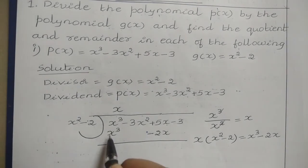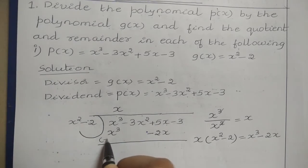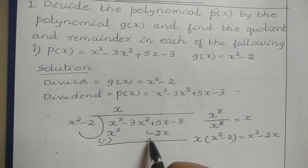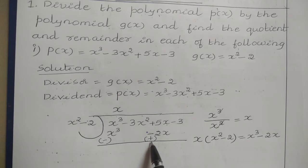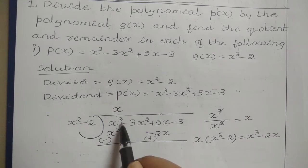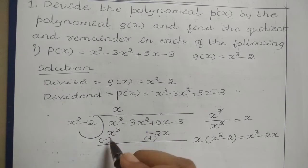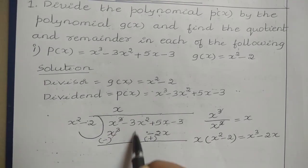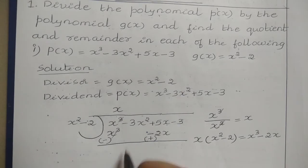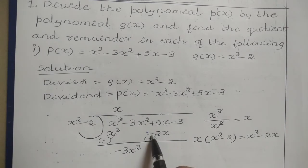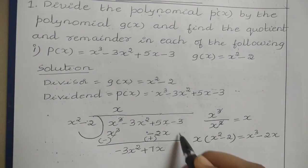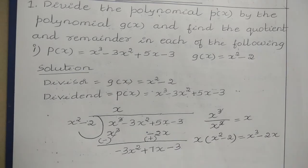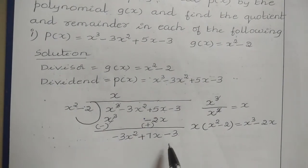Now perform the subtraction. The plus sign becomes minus, and the minus sign becomes plus — so minus minus becomes plus. X cubed minus X cubed cancels. We have minus 3X squared with no term below it, so minus 3X squared remains. Then 5X plus 2X gives 7X. The constant term minus 3 has no term below it, so we get the new dividend: minus 3X squared plus 7X minus 3.